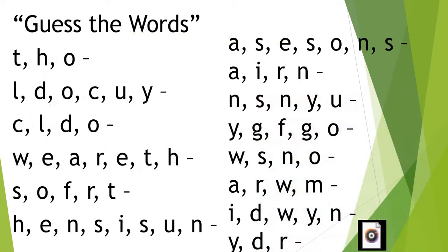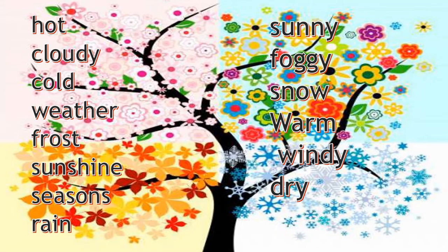The next — task one. Please open your copy book, write down the date and write down the same. The first task: quiz the words. You have two minutes. Okay, let's check: hot, cloudy, cold, weather, frost, sunshine, seasons, rain, sunny, foggy, snow, warm, windy, and dry.